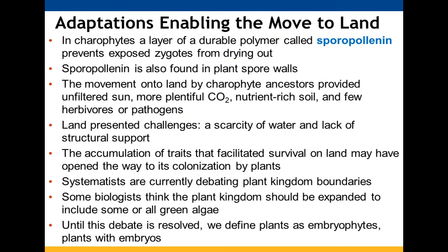Charophytes have a layer of a durable polymer called sporopollenin that keeps their zygotes from drying out. We see this also in plant spore walls. There were benefits to moving onto land for the charophyte ancestors: lots of sunlight, lots of carbon dioxide, and soil that had not been used and had lots of nutrients.